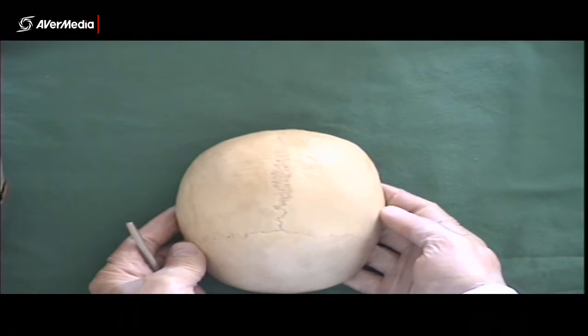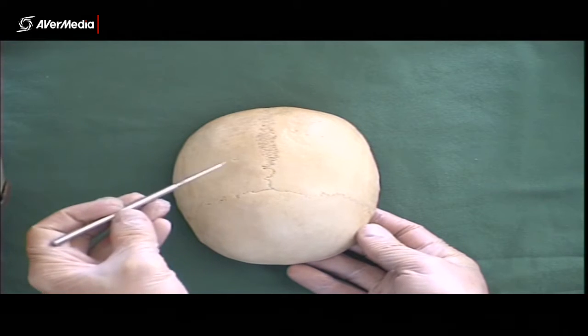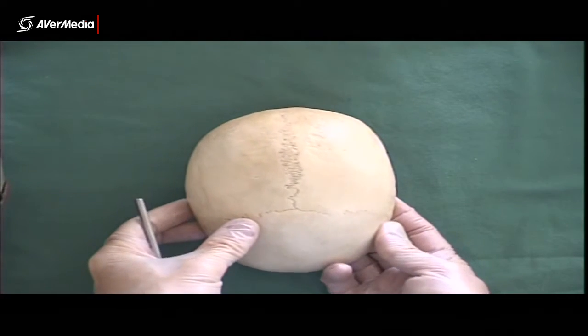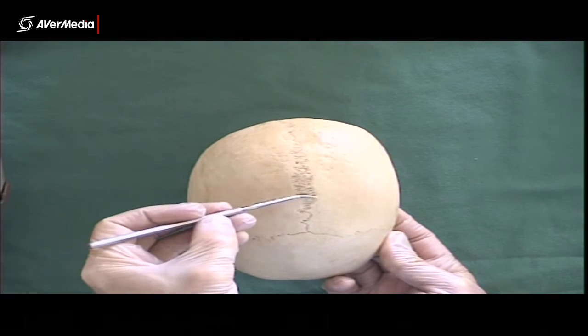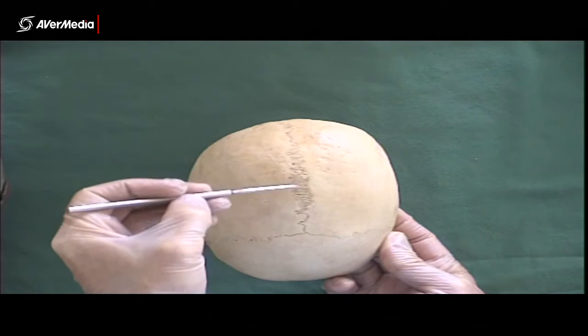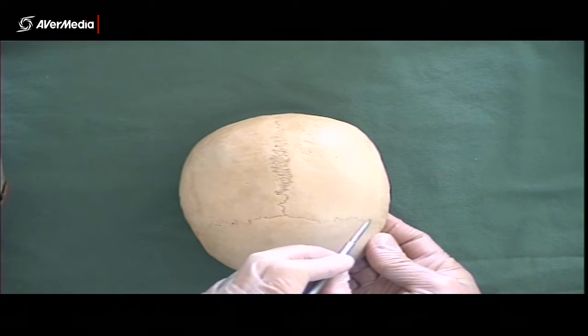If we have a look at the same features on a real skull, they look a little different but essentially the same. Here we've got the frontal bone and two parietal bones. Here's the sagittal suture. Just notice that there's a lot of interdigitation here. It's not just a straight line like it was on the plastic skull. And here, of course, we have the coronal suture.